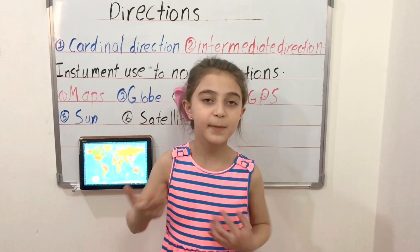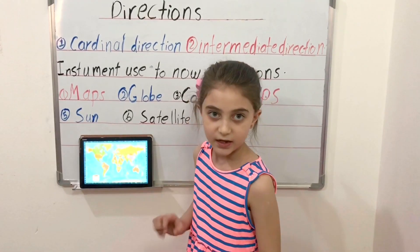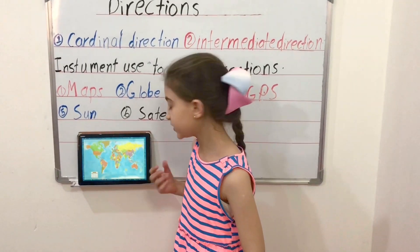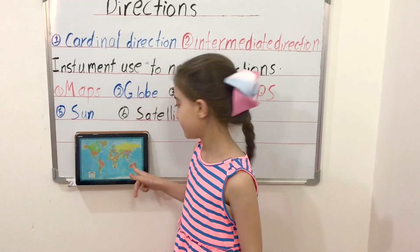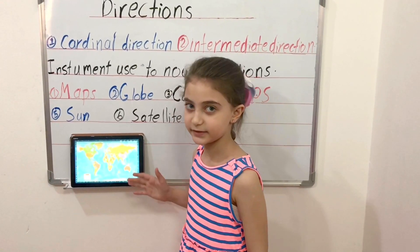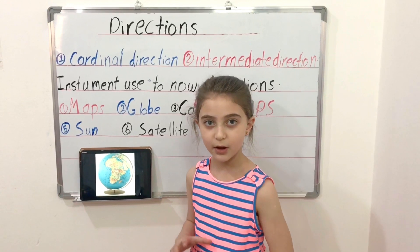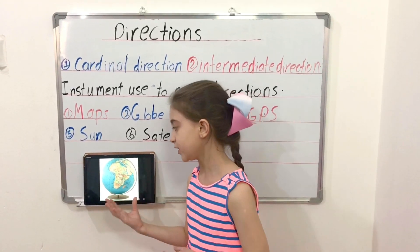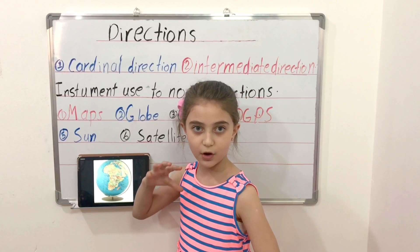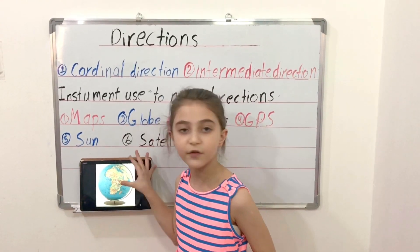What are maps? Maps are drawings that tell us where a place is located. What is a globe? A globe is a spherical model of the earth — it is the same shape as the earth.